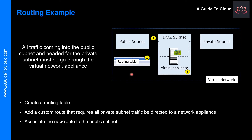Let's review a specific network routing example. In this example, you have a virtual network that includes three subnets: private, DMZ, and public. In the DMZ subnet, there is a network virtual appliance. Network virtual appliances are VMs that help with network functions like routing and firewall optimization. You want to ensure all traffic from the public subnet goes through the network virtual appliance to the private subnet.